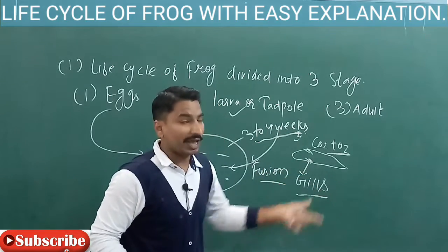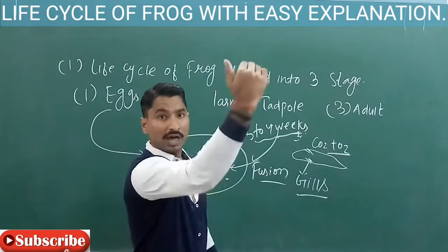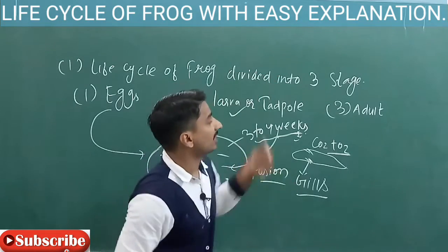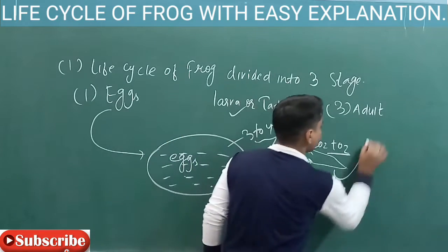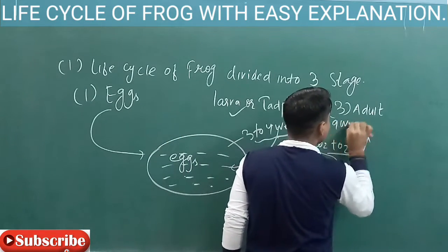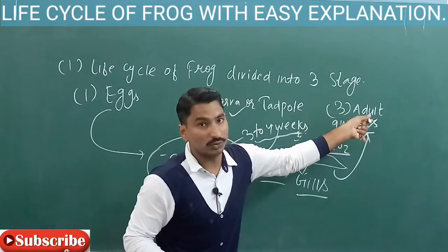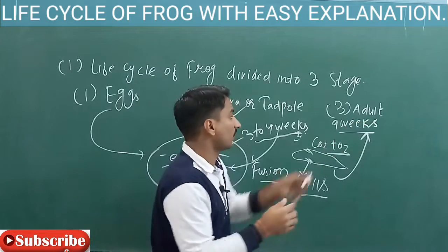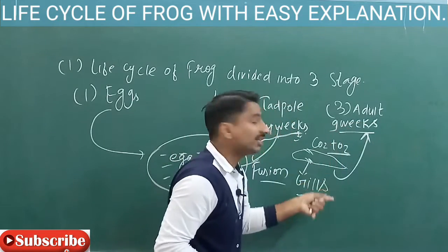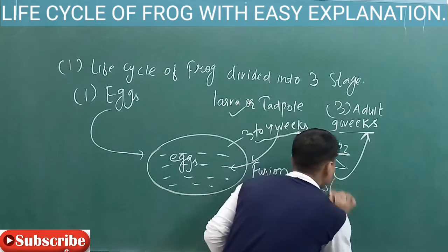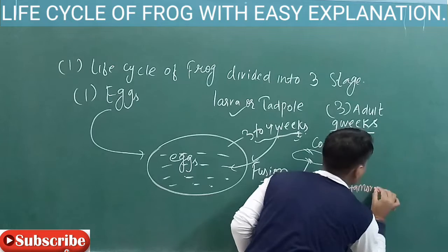In three to four weeks the larva is formed. Now the larva has to become an adult. For the larva to go from larva stage to adult stage, it takes a total of nine weeks. After nine weeks, the larva will change into an adult. This process is called metamorphosis.